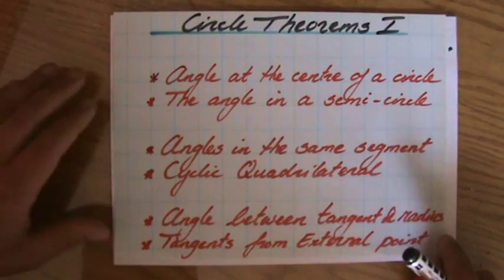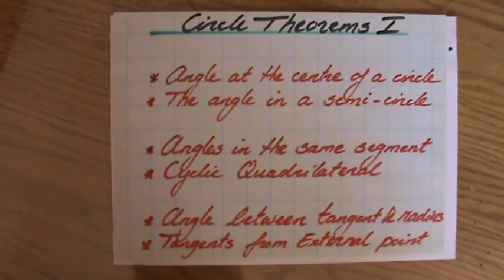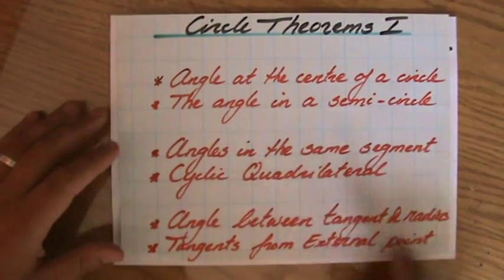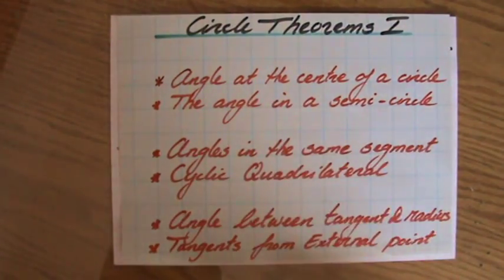The last things you need to know are angles between a tangent and a radius and tangents from external points. I'm just going to say something about that too. So here we are already talking about tangents.